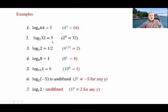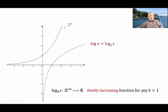Log base 2 of negative 5 is undefined, because 2 to the power y can never equal negative 5. Log base 1 of 2 is also undefined, because 1 to the power y cannot equal 2 for any y. That is why we require x to be positive and b to be positive and greater than 1. Here are the graphs of these functions: 2 to the power x is an increasing, always positive exponential function, and log base 2 of x is its inverse. In computer science, base 2 is most commonly used.